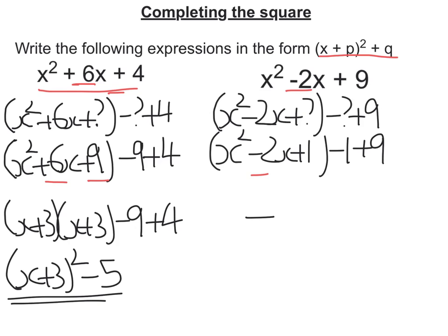Now we're looking to factorise what we have in the bracket. So we're looking for two numbers that times to get to 1 but add to get negative 2. Well that is negative 1 and negative 1. So we're going to have x minus 1, x minus 1, minus 1 plus 9.